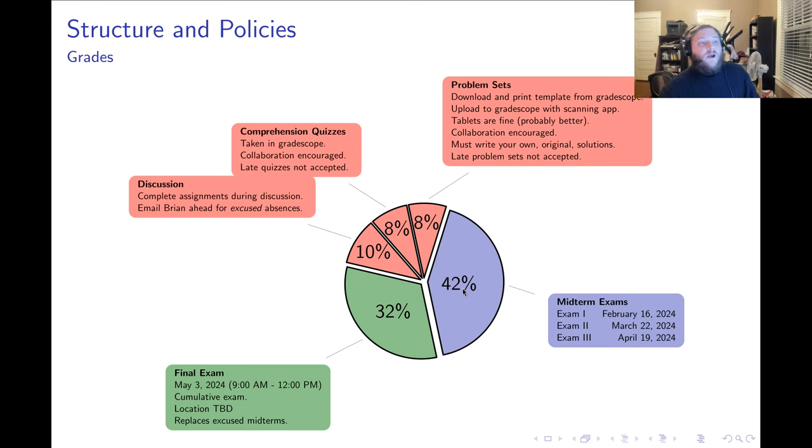The next 42 percent of your grade is your performance on the three midterm exams. Exam one is on February 16th, exam two is March 22nd, and exam three is April 19th. Those are taken in class during lecture time. Finally, the last 32 percent of your grade is your performance on the final exam. The final exam takes place on May 3rd, 2024 from 9 a.m. to noon. This is a three-hour cumulative final, so it tests everything that we do in the course. We don't have a location yet, but we will as the semester progresses.